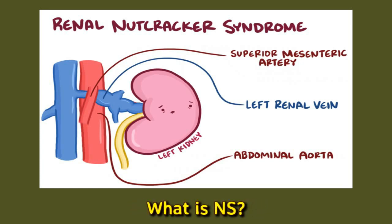Before reaching the inferior vena cava, the left renal vein passes between two major abdominal arteries: the abdominal aorta and the superior mesenteric artery. In nutcracker syndrome, there is not enough space for the left renal vein to pass between these two arteries.